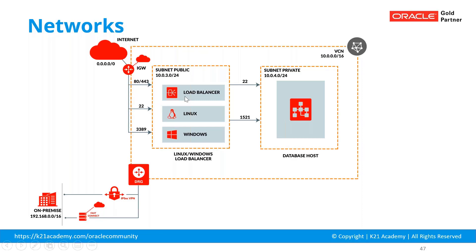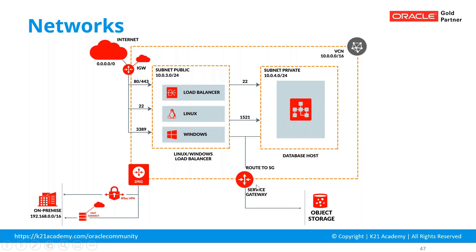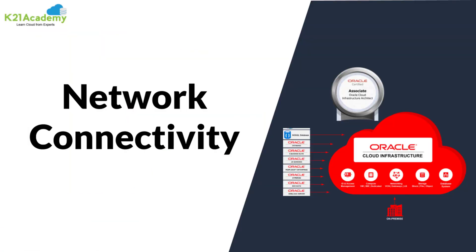These machines may also need patching or backup and restore configuration without going over the internet. In that case, they connect to object storage or a Yum repository through a Service Gateway. So this routing via the Service Gateway handles that internal connectivity.